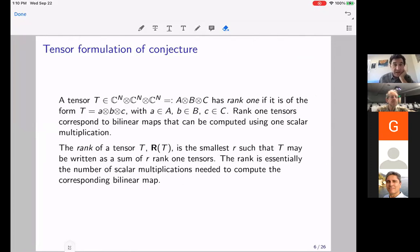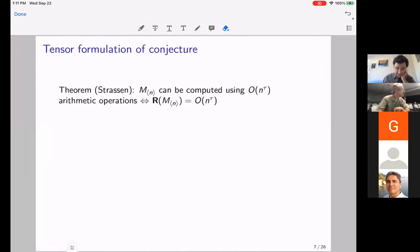Okay, so first definition, just like a matrix has rank one, if you can write it as a product of a column vector and a row vector, a tensor has rank one, if you can write it as a column vector, a row vector, and a vector sticking out of your computer screen. And so that's a rank one tensor. And a rank one tensor corresponds to a bilinear map that can be computed using one scalar multiplication. And you can define the rank of a tensor, just like the rank of a matrix can be defined this way, as the smallest R, such that the tensor can be written as a sum of R rank one tensors.